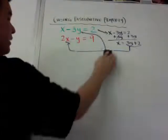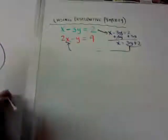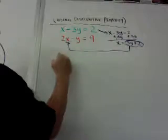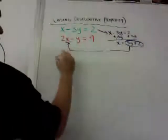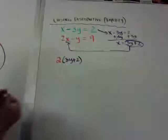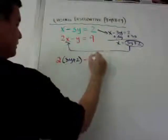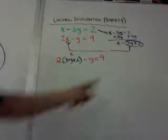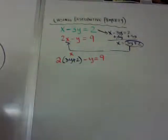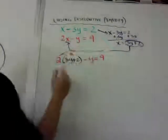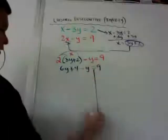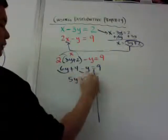I'm going to use the first example. When I take 3y plus 2 and substitute it into x, I rewrite the equation as: 2 times (3y plus 2) minus y is equal to 9. Instead of the red x, I put 3y plus 2 — that's substitution. Now when I solve it, I need to distribute. I get 6y plus 4 minus y is equal to 9. Now I'm where I was with the others — I combine like terms: 6y minus y is 5y, so 5y plus 4 is equal to 9.